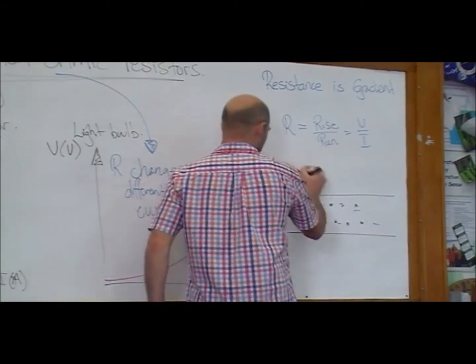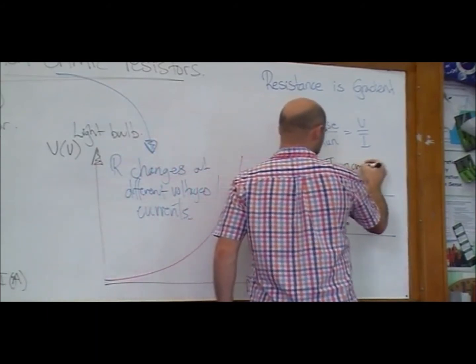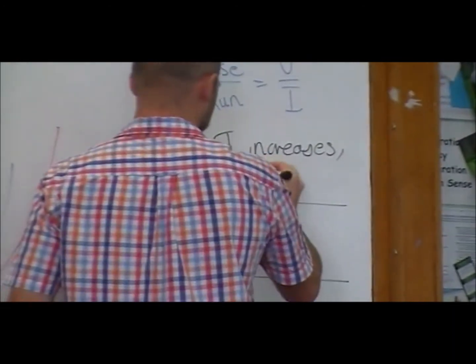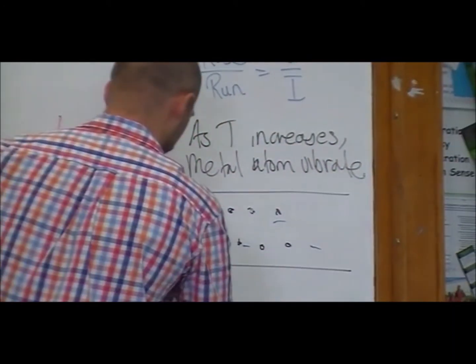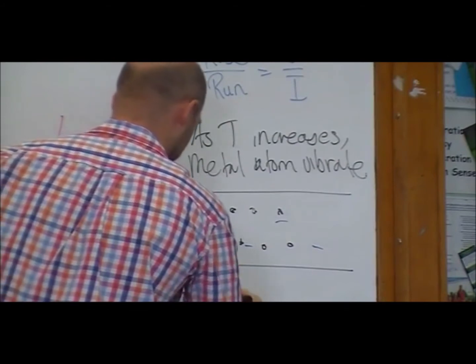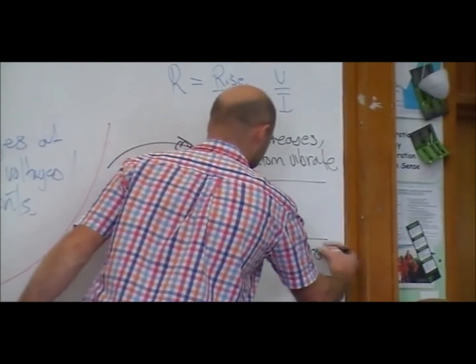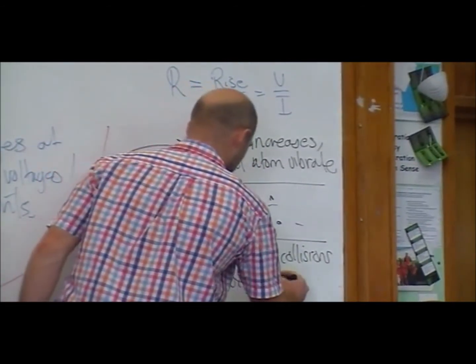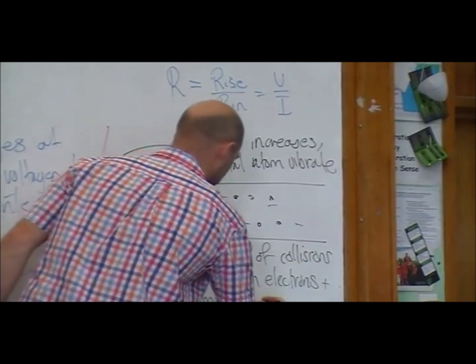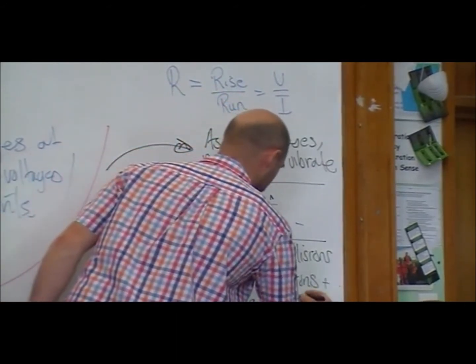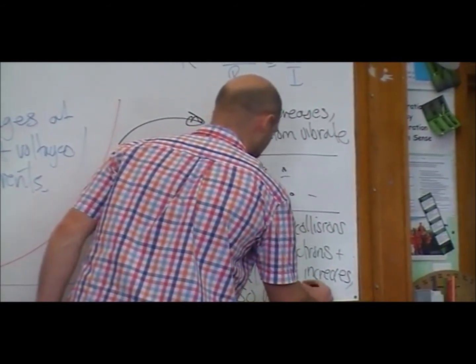So what we learned from this graph is that as temperature increases, metal atoms vibrate. Likelihood of collisions between electrons and metal atoms increases, so resistance increases.